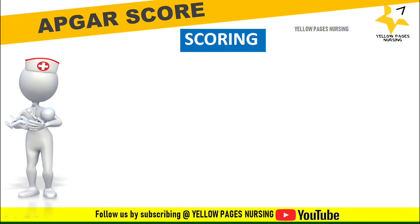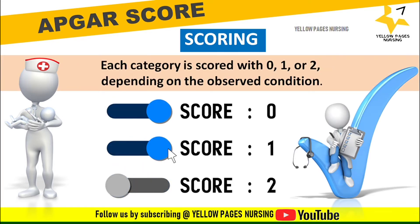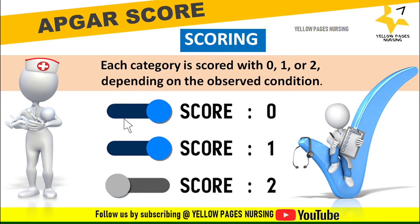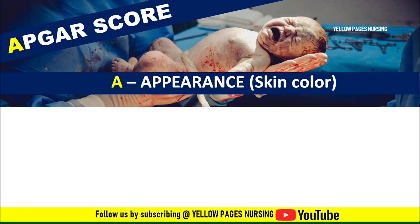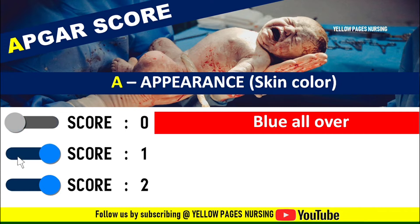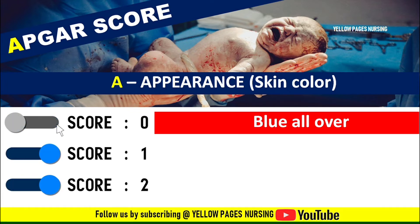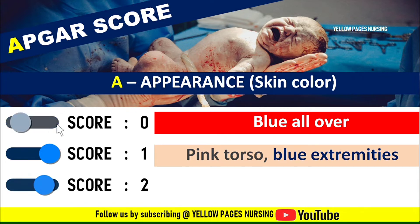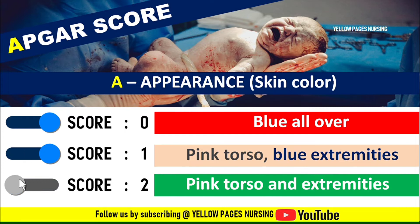This may be repeated at 10 minutes if the score remains low. Each category is scored with 0, 1, or 2 depending on the observed condition, and these are totaled for a score of 0 to 10. First comes Appearance, that is skin color. Score 0 indicates cyanotic or blue all over the body. Score 1 indicates pink torso but blue extremities. Score 2 indicates pink torso and extremities — if the entire body is pink, the infant scores 2 for color.